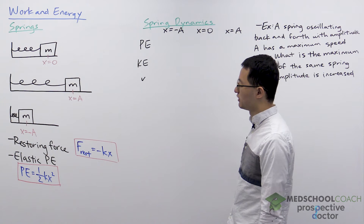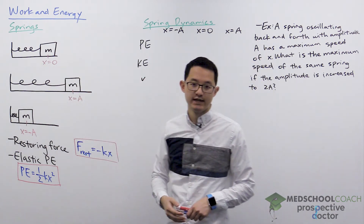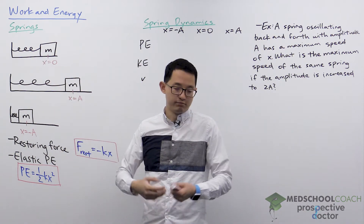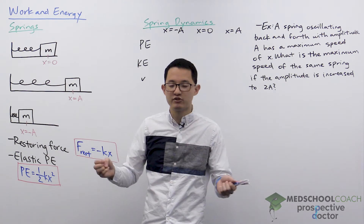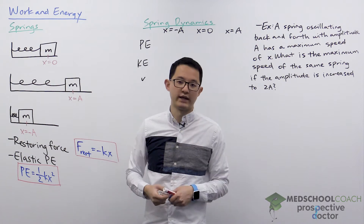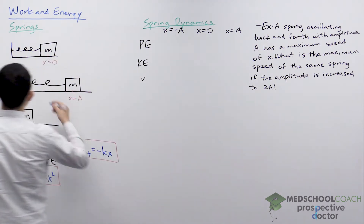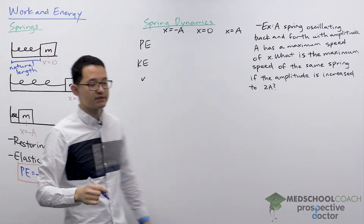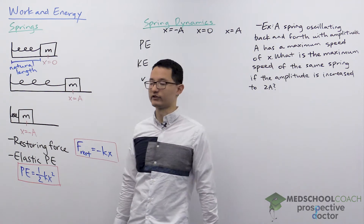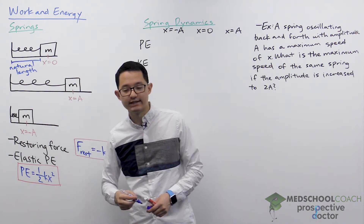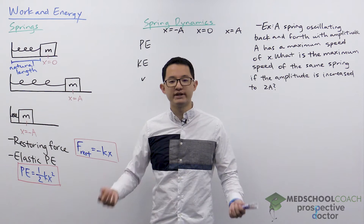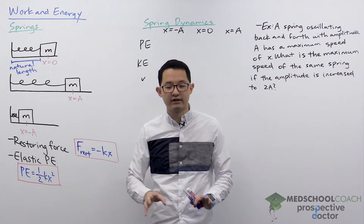When we're looking at springs we're generally looking at a spring attached to a mass. In this case I have a horizontal spring attached to a mass. The original length of the spring is what we call the natural length, sometimes also called the equilibrium length — they refer to the same thing. When the mass is at position x equals zero, such that the spring is at its natural length, the spring is not under any stress; it's at equilibrium and will sit there and do nothing.